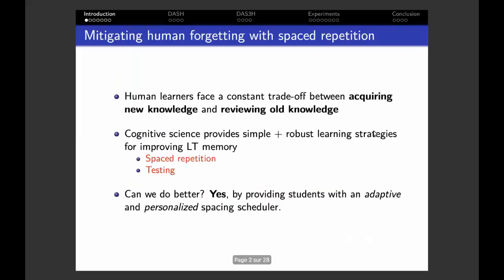I'd like to start with a trade-off that every learner and especially every student has to face. We all need to spend time to acquire new knowledge, but since our memory is imperfect, we must also review what we have previously learned so we don't forget it. Since our time is not extensible, we would like to spend as little time as possible reviewing old knowledge while maximizing the benefits on long-term memory.